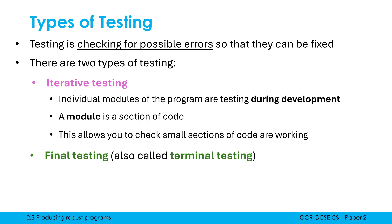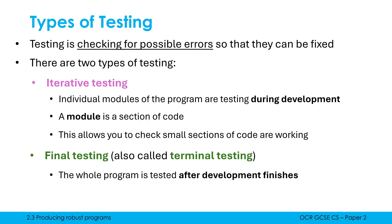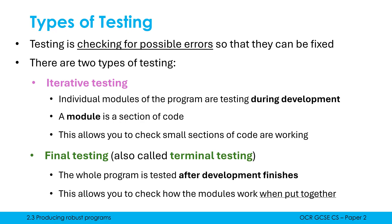The benefit of iterative testing is it enables you to check small sections of code are working as you progress. It may be easier to find bugs when thoroughly checking a small bit of code. The alternative would be to bypass this and hope it roughly works, and then at the end you may find you have many more errors. However, iterative testing wouldn't be enough on its own — once you finish coding all the features, it's important to test the whole program collectively to see how the modules work when put together. It's possible all your modules work individually, but when combined, there are a few more bugs to iron out.